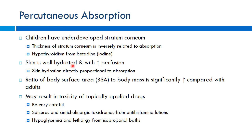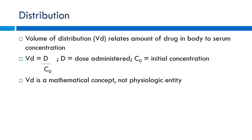Children's skin is also very well hydrated, increasing perfusion, and their body surface area to body mass ratio is significantly higher than adults. Even covering a small portion of their skin can lead to significant drug absorption. Toxicity examples include antihistamine lotions causing seizures and anticholinergic effects, and isopropyl alcohol (rubbing alcohol) causing hypoglycemia and lethargy through transdermal absorption — essentially getting 'drunk' through the skin.